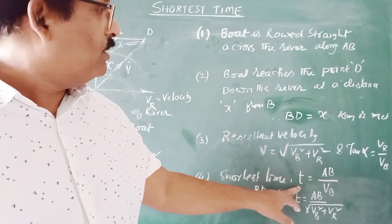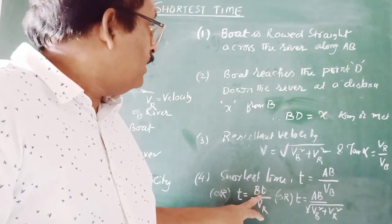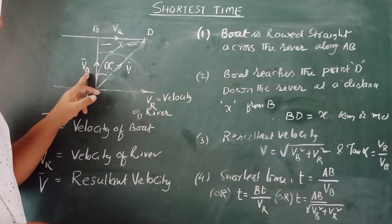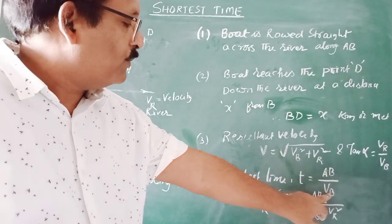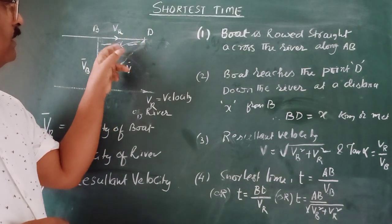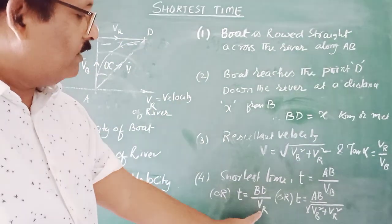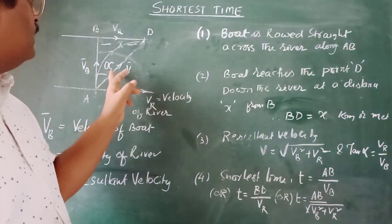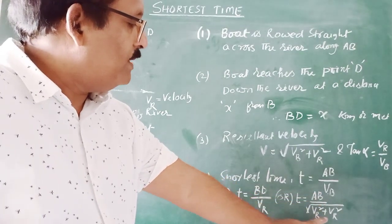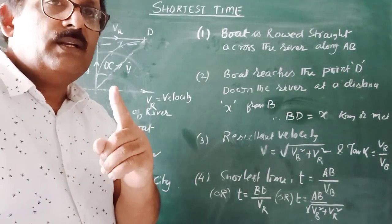The shortest time T: the distance travelled is AB, and the corresponding speed is VB, so the shortest time equals AB divided by VB. If you consider side BD, the distance is X with velocity VR along that line, so the time is X divided by VR. You can also take path AD: the distance is the square root of VB squared plus VR squared, and the corresponding velocity is the resultant.